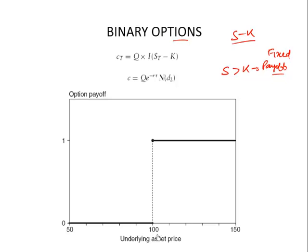For example, if $100 is the strike price and the spot price ends up anywhere above this, then there will be a fixed payoff regardless of how much above $100 the spot ends. If the spot is below $100, then there will be no payoff. This is a binary option.